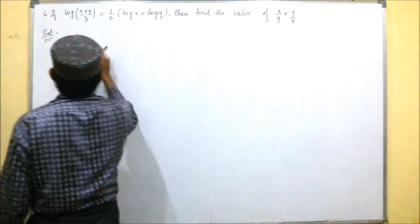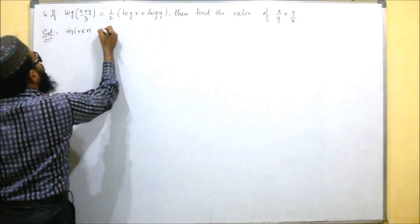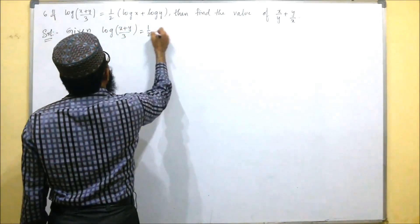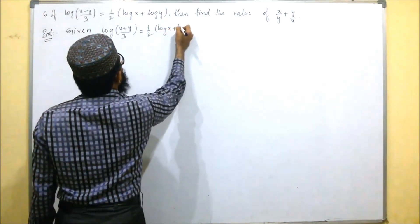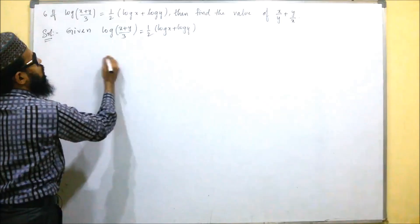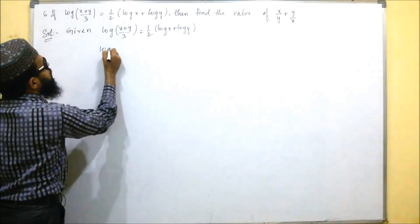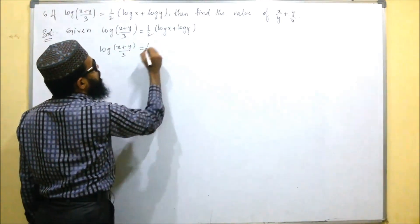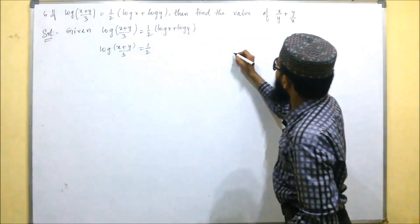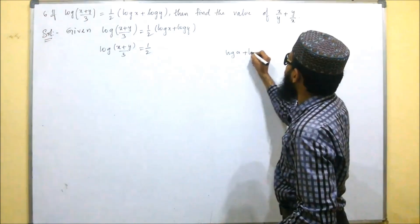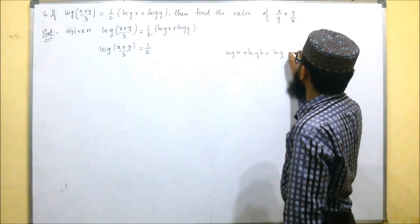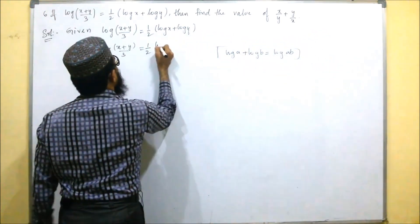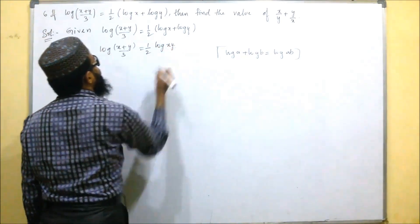So let's start with what they have given: log((x + y)/3) equals half log x plus log y. We cannot cancel the log directly, so we use the formula log a + log b = log(ab). So the right side becomes log(xy).